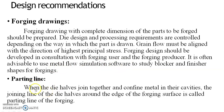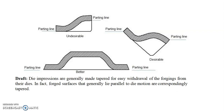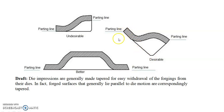Regarding parting lines: when the die halves join together and confine metal in their cavities, the joining line of the die halves around the edge of the forging surface is called the parting line. Parting line plays a very important role. As observed in the figure, when the parting line is straight, the grain flow is disturbed — stress flow lines are not constant and stress discontinuities are likely to occur. Changing the parting line angle slightly improves grain flow smoothness.